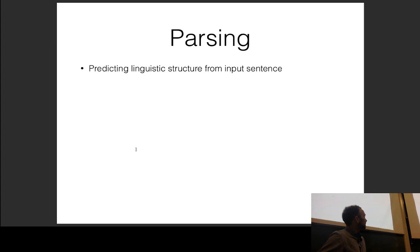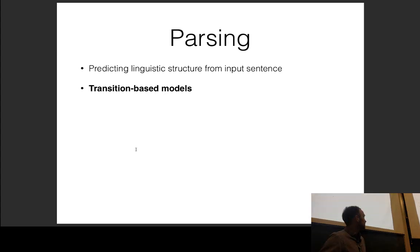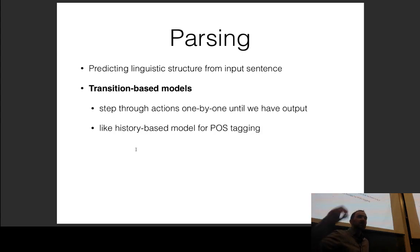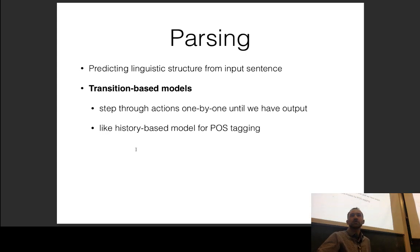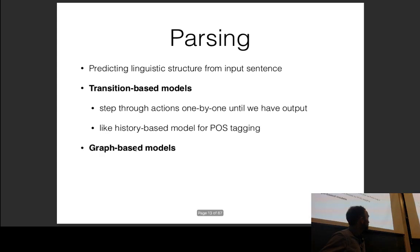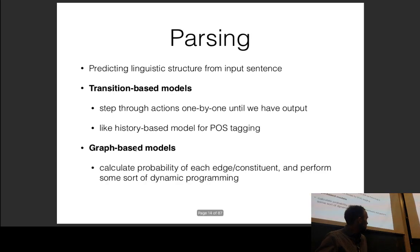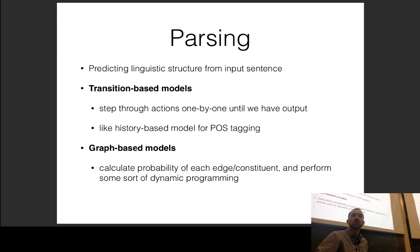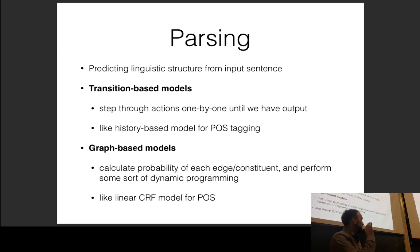Syntactic parsing is predicting linguistic structure from an input sentence. There are transition-based or incremental methods, which step through actions one by one until we have an output — similar to a history-based model for POS tagging. There are also graph-based or dynamic programming-based models that calculate the probability of each edge or constituent and then perform dynamic programming to give you a tree — more like linear CRF models.